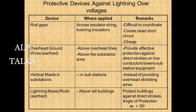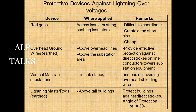Rod gaps are a device for protecting against lightning overvoltages across insulator strings and bushing insulators, though coordination is difficult as they create a dead short circuit. Overhead earth wires above the substation area provide effective protection against direct strokes on line conductors, substation equipment, and service buildings. Alternatively, vertical masts in substations can replace overhead shielding wires. Lightning masts or rods earthed above tall buildings protect against direct strokes, with an angle of protection generally 30 degrees.